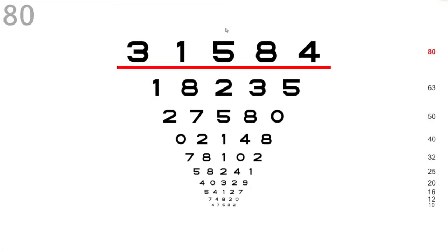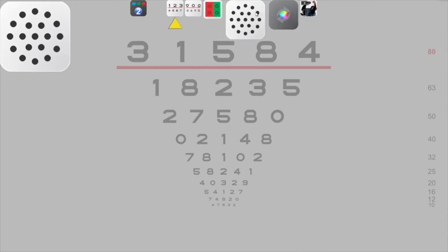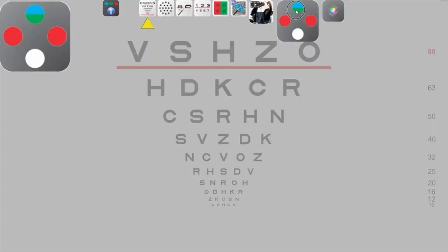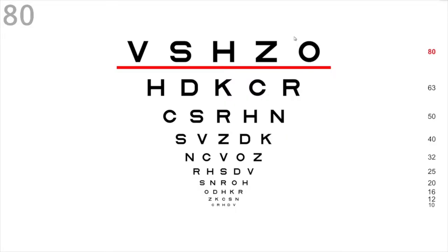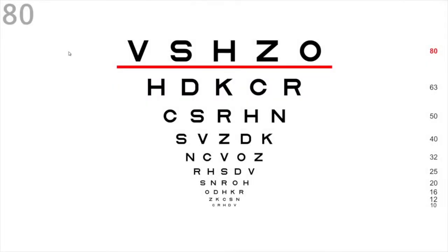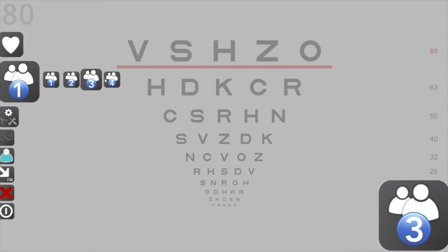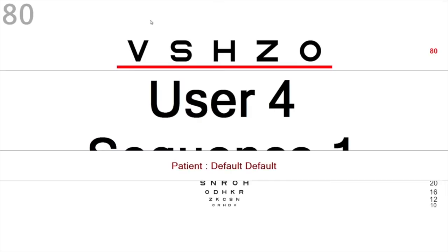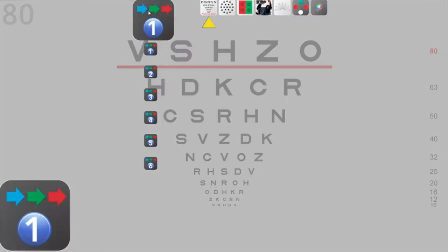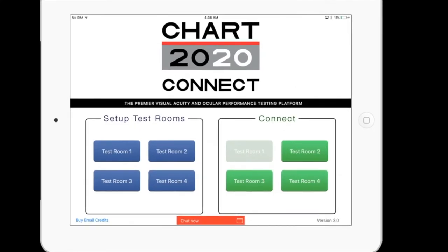Now let's change the order and move the showerhead so that it is ordered after the duochrome circles by dragging and dropping within the Sequence. We no longer need the Worth 4 dot chart, so let's drag and drop it out of the Sequence. The Pro version also adds a multi-user feature so that each user in the Chart 2020 system can control their own individualized sequences — a great feature for multi-doctor practices. All sequences are auto-synced to the iPad application.